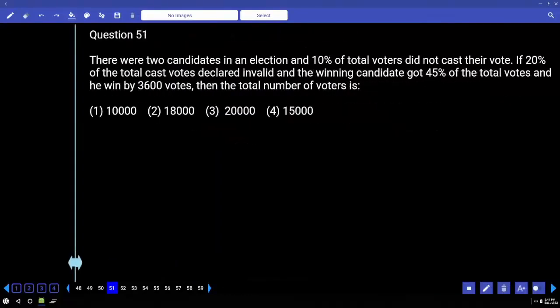There were two candidates in an election and 10% of total voters did not cast their vote. If 20% of the total cast votes declared invalid and the winning candidate got 45% of the total votes and he won by 3600 votes, then the total number of voters is: